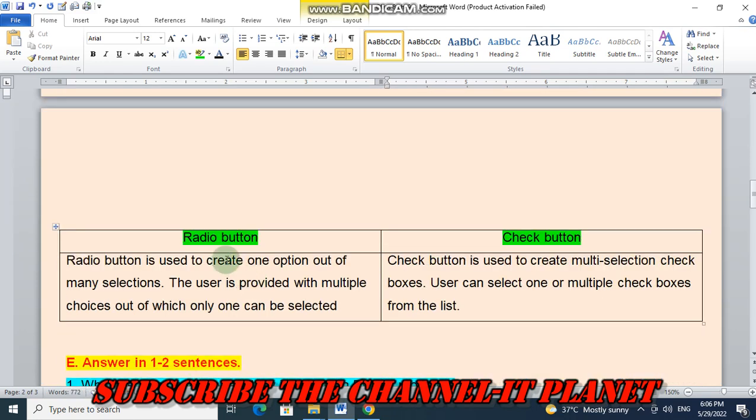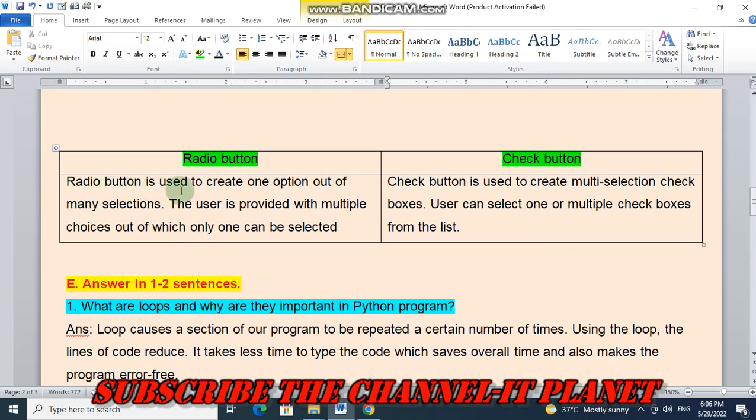Next difference is radio button and check button. Radio button is used to create one option out of many selections. The user is provided with multiple choices out of which only one can be selected. And in check button, check button is used to create multi selection checkboxes. User can select one or multiple checkboxes from the list.